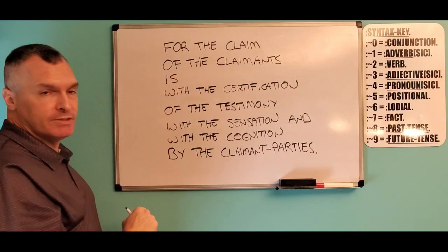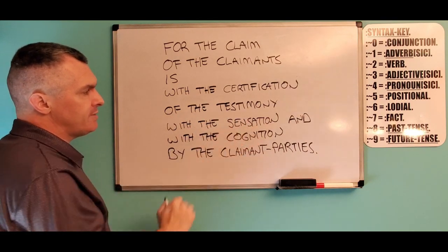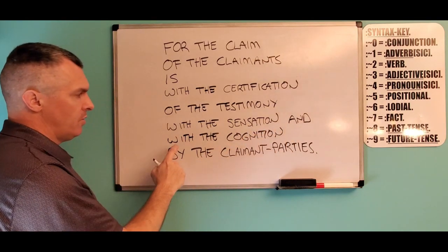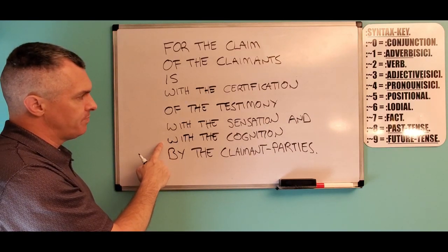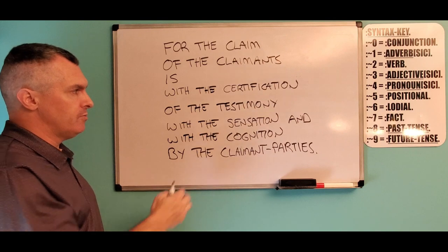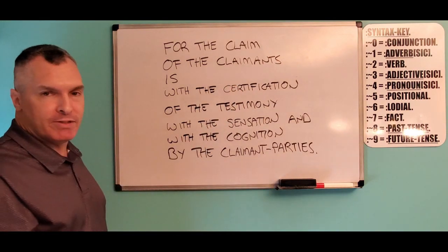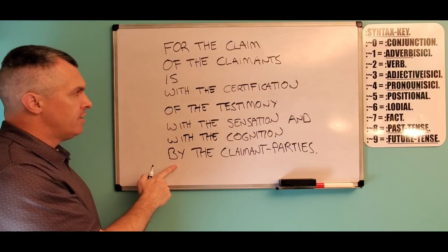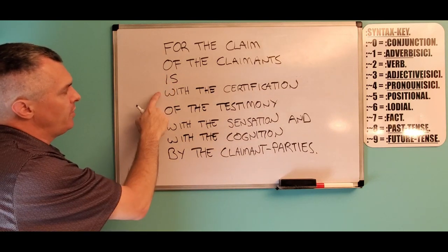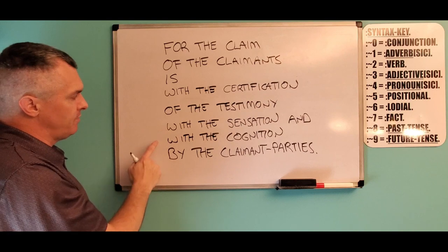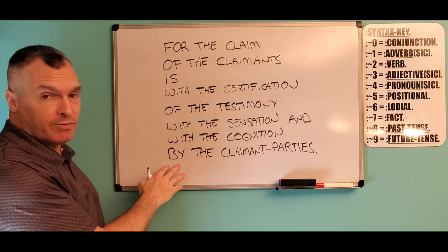Now we move into the possessive of the claim with the certification, and then we have another concern because 'of' is the concern positional of the testimony. We have another concern — a possessive of the testimony, which is the concern of the certification. And the authority is 'by the claimant's party.' The authority positional is 'by.' So you have: for, cause; of, concern; of, concern with possessive; with possessive; connected by a conjunction 'and'; in the authority, which is 'by.'